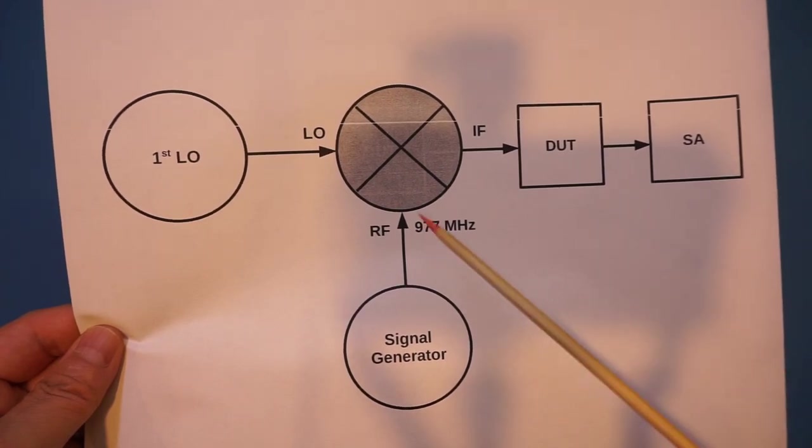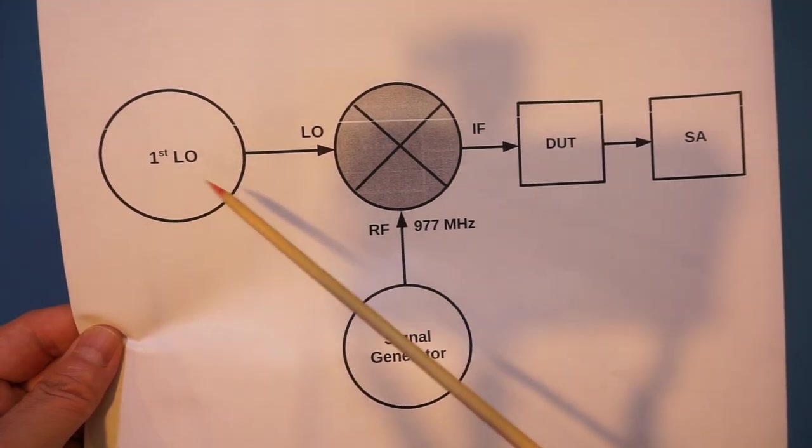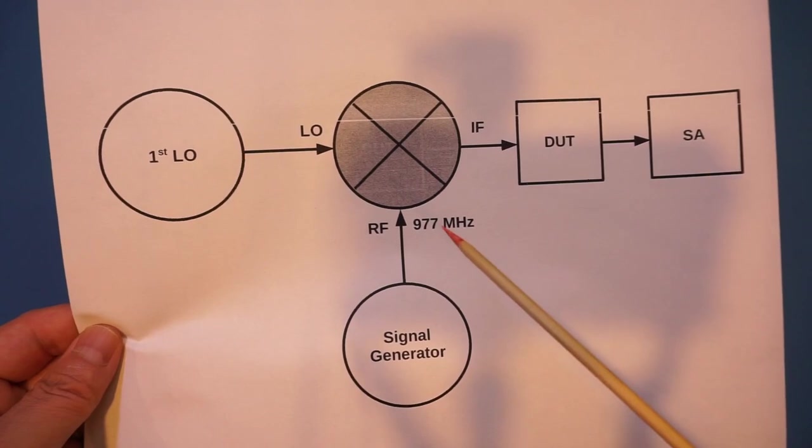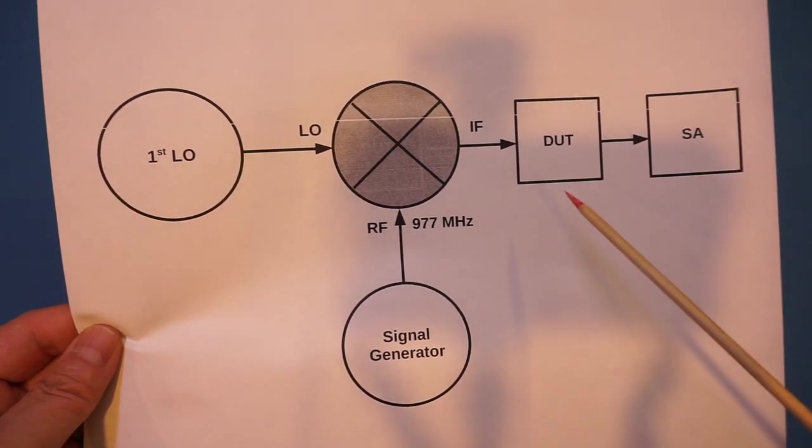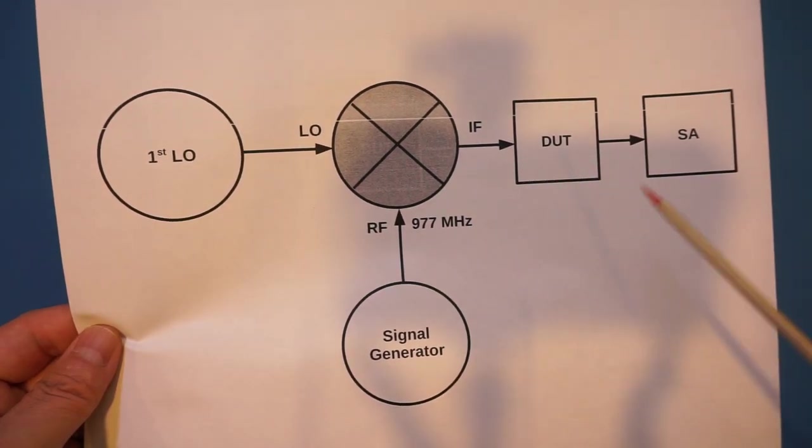As we have subtracted that 977 MHz IF from the input, so the input into the device under test is swept between 0 and 10 MHz, which is in sync with the Spectrum Analyzer's sweep. And that is essentially a tracking generator.